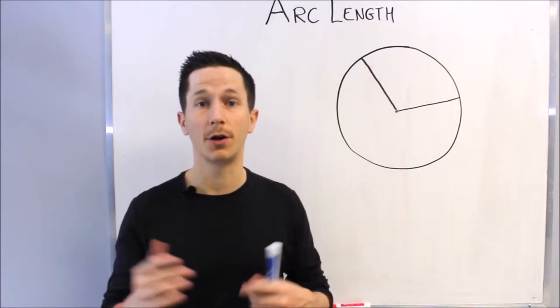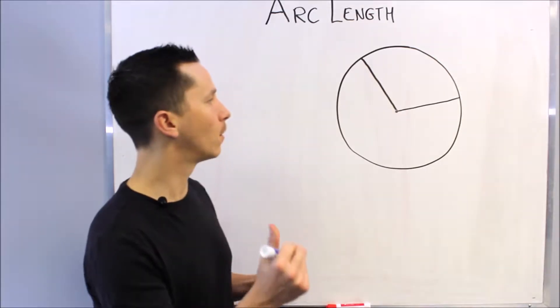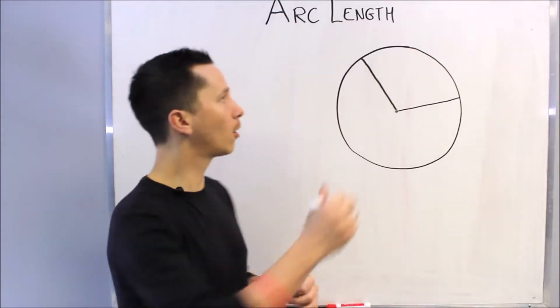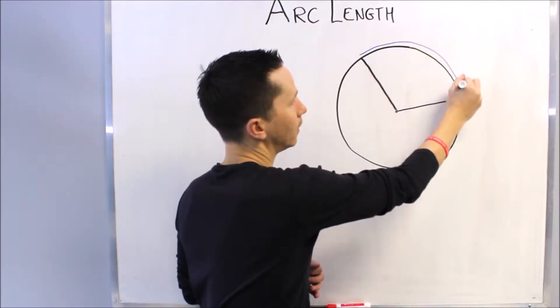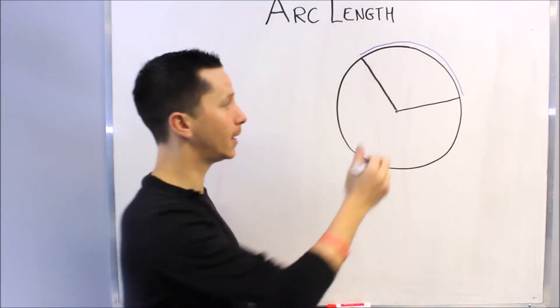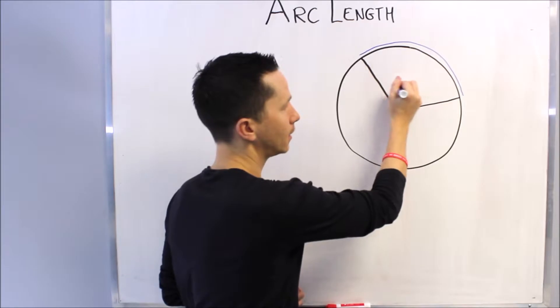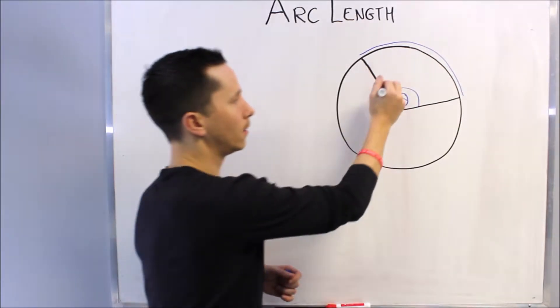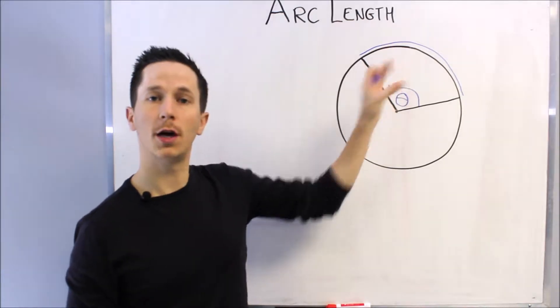So what is arc length? Arc length measures the length or the portion of the circumference of a circle given some central angle. So I'll call that central angle theta. It's the angle that measures that portion of the circle, and it's the central angle because the angle is formed at the center.